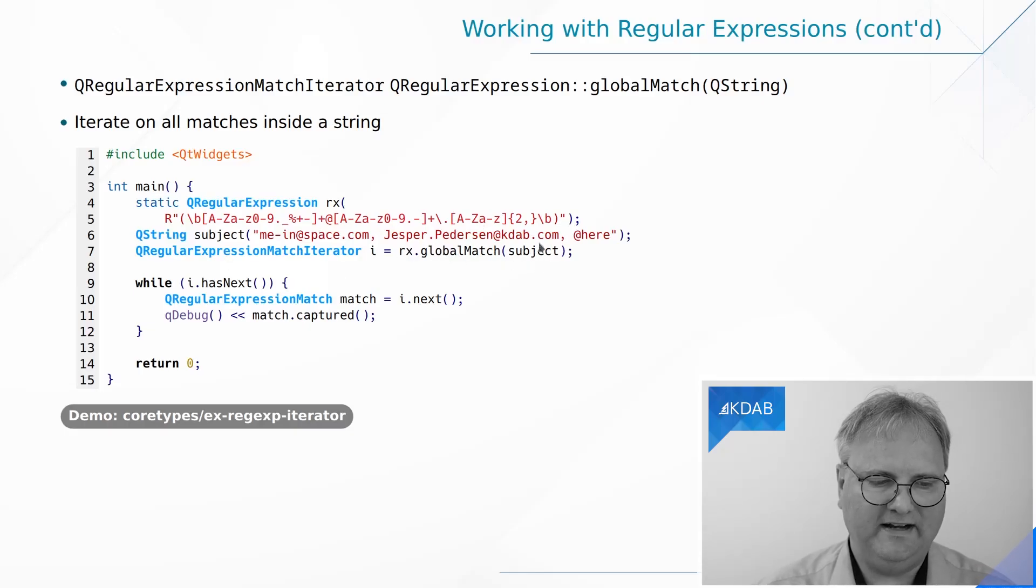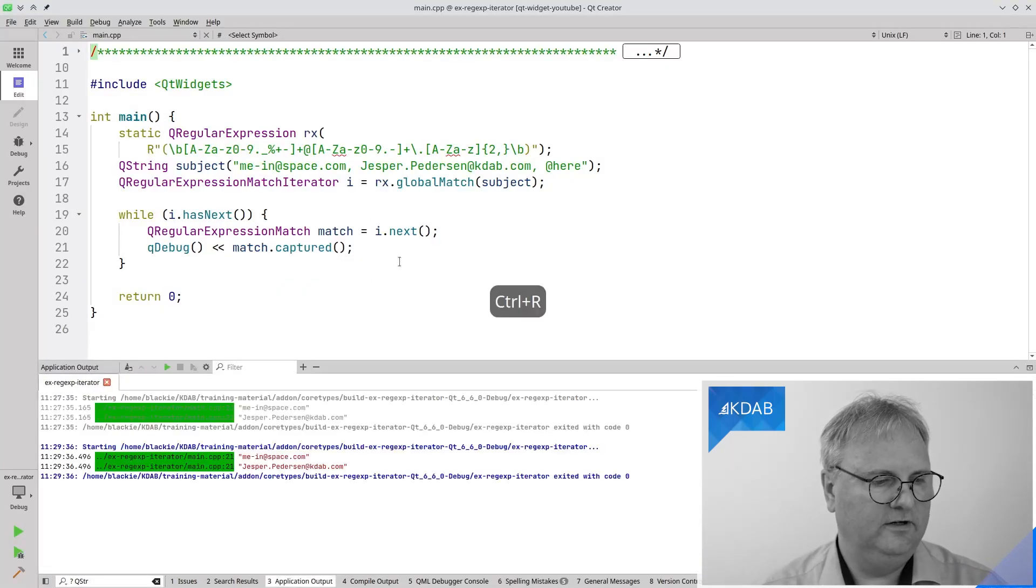Then I have a subject here. Subject, that's not an email subject, it's a subject of what I want to match. So I have a string with email addresses, and I simply ask my regular expression to do a global match on this. I get a QRegularExpressionMatchIterator out of that, and then I simply iterate through it in a Java style: while I have next, give me the next match and I can do something with it. Let's see this running. You can see that it matches the valid email addresses but did not match invalid ones according to this regular expression.